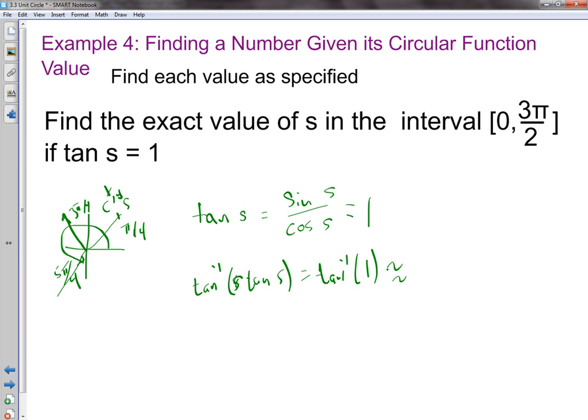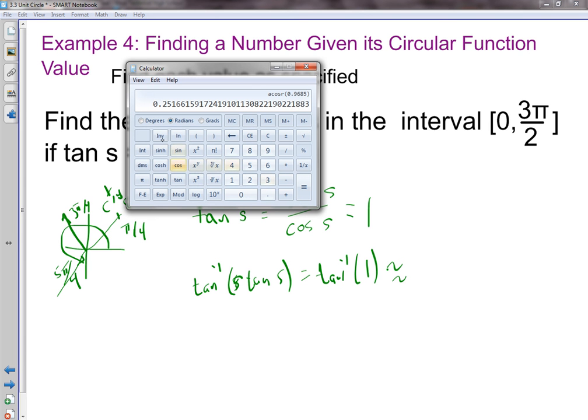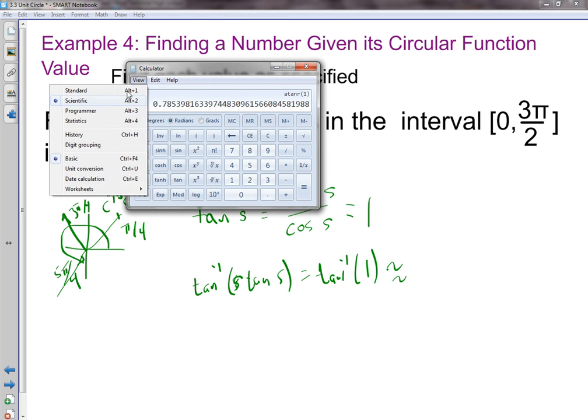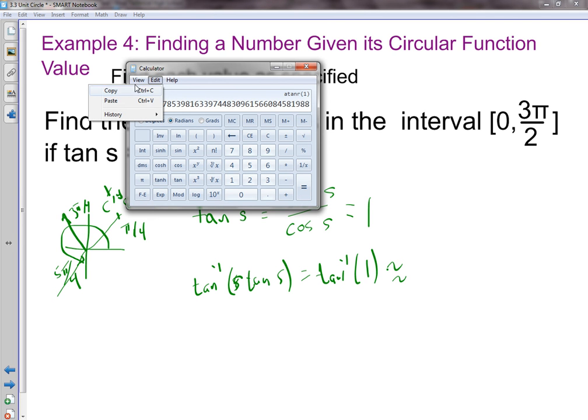So we can check both of that and make sure we're on the right path here. We're going to take the inverse. We'll clear this. We have 1. We want the inverse tangent. So we want 1 inverse tangent. And that tells us it's 0.7854. That's the decimal approximation. They wanted the exact value.